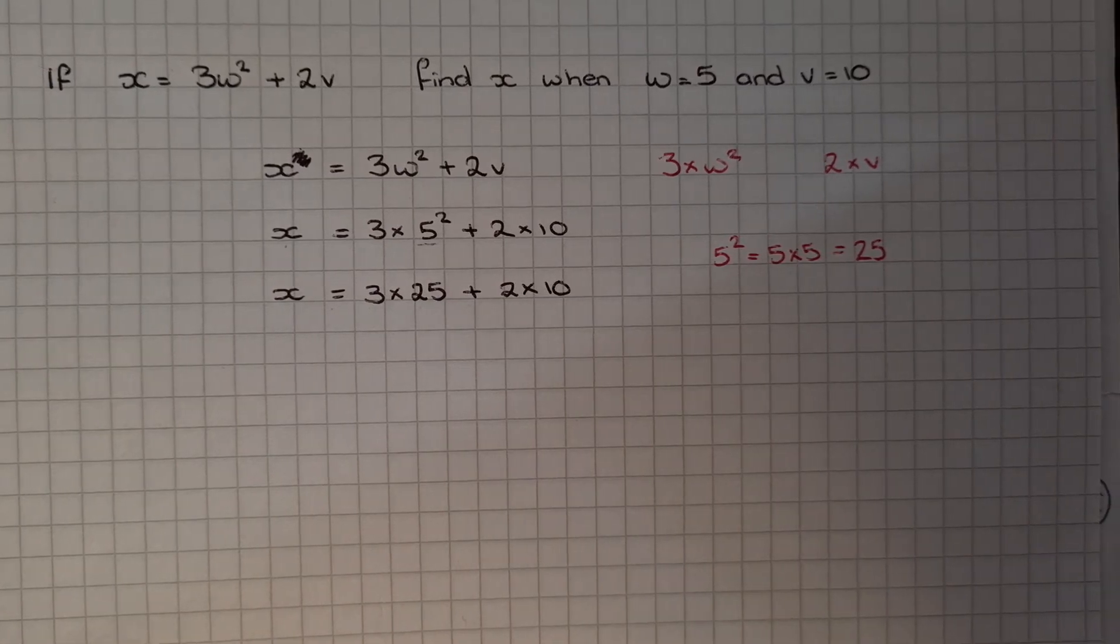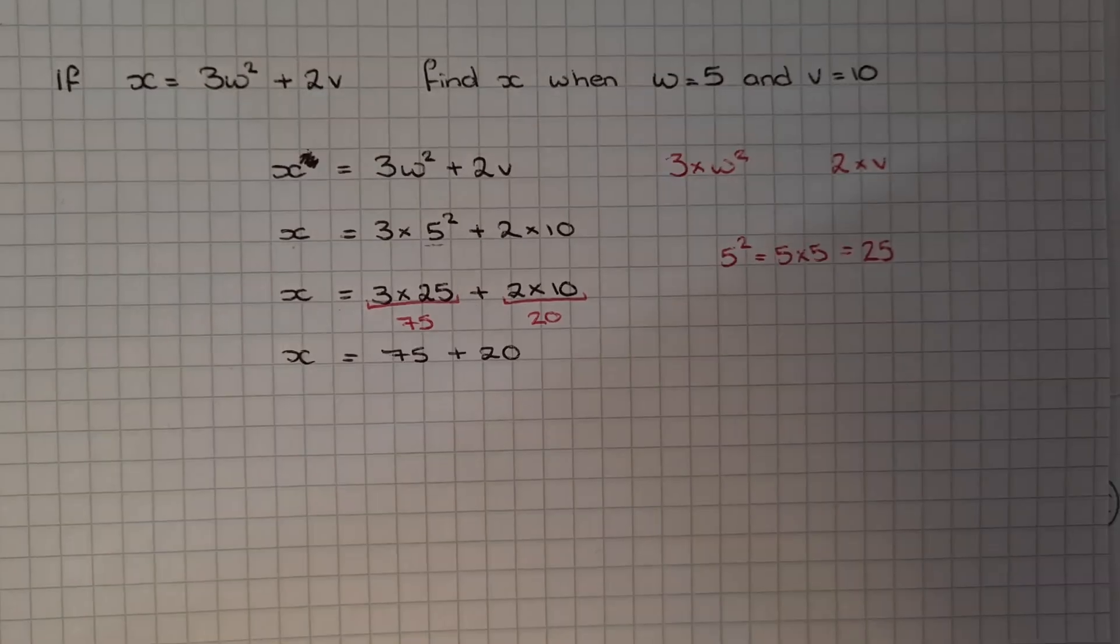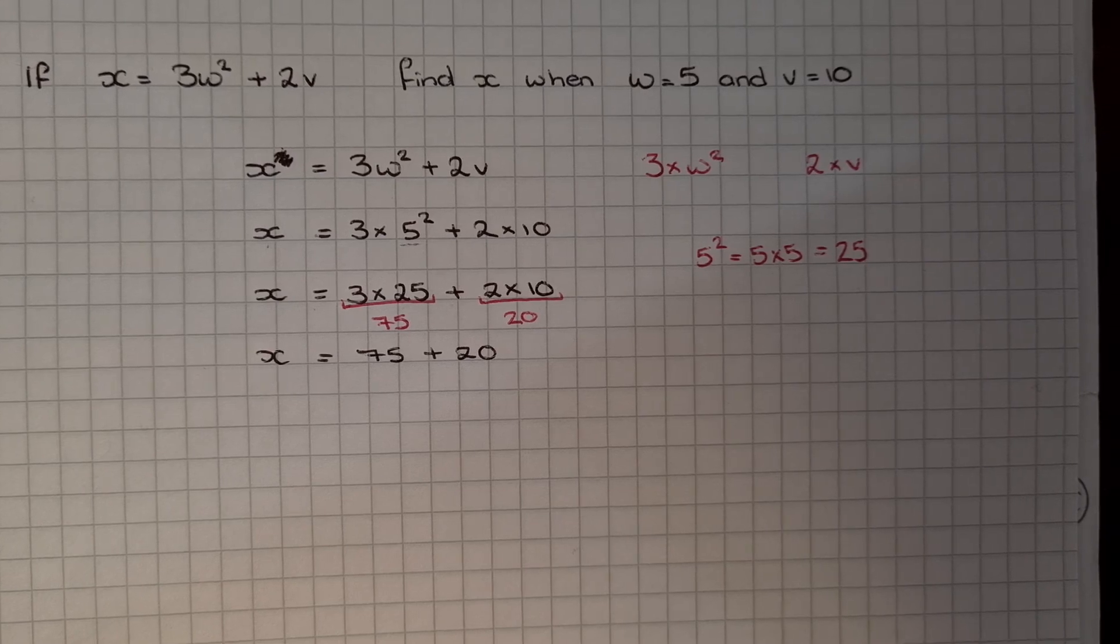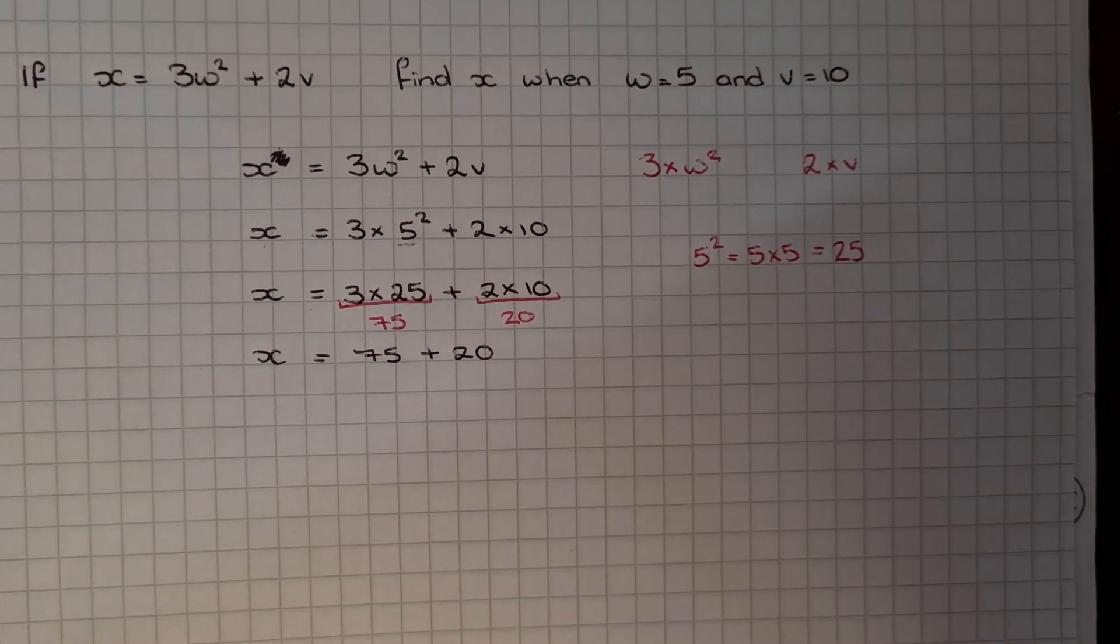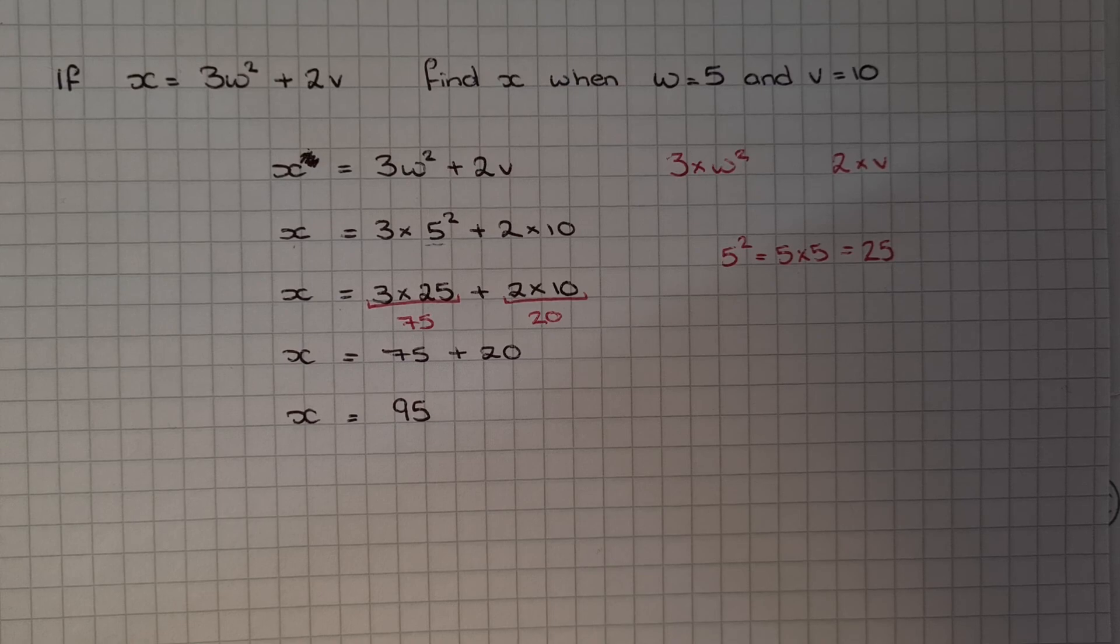Again, using BODMAS, we now need to do the multiplication. 75 plus 20. And then we can add them together. And we end up with X equals 95.